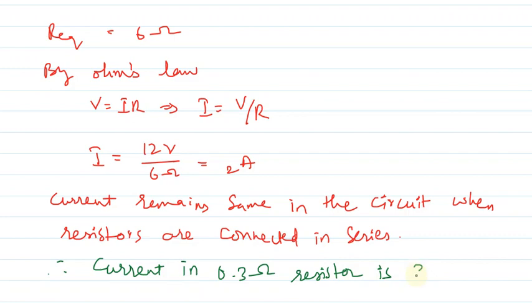Therefore, current in the 0.3 ohm resistor is 2 amperes. Hope you have understood the explanation, thank you.